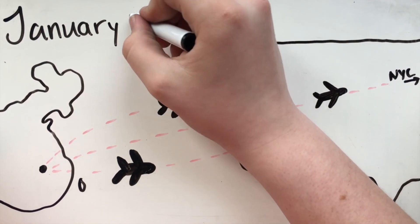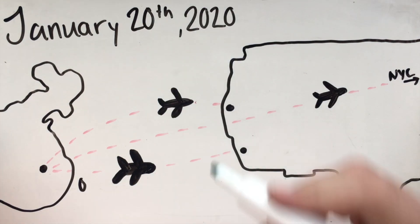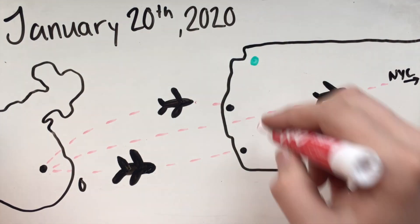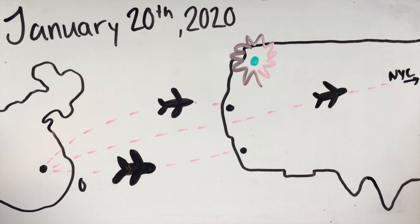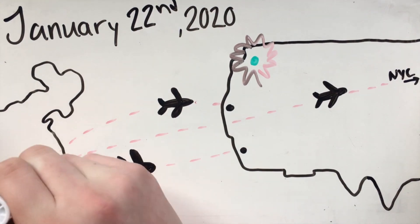Three days later, on January 20th, 2020, we announced our first case in Washington State. This was the same day that South Korea reported theirs. On January 22nd, China completely cut off the city of Wuhan, and Trump stated that the pandemic is totally under control. It's only one person coming in from China.